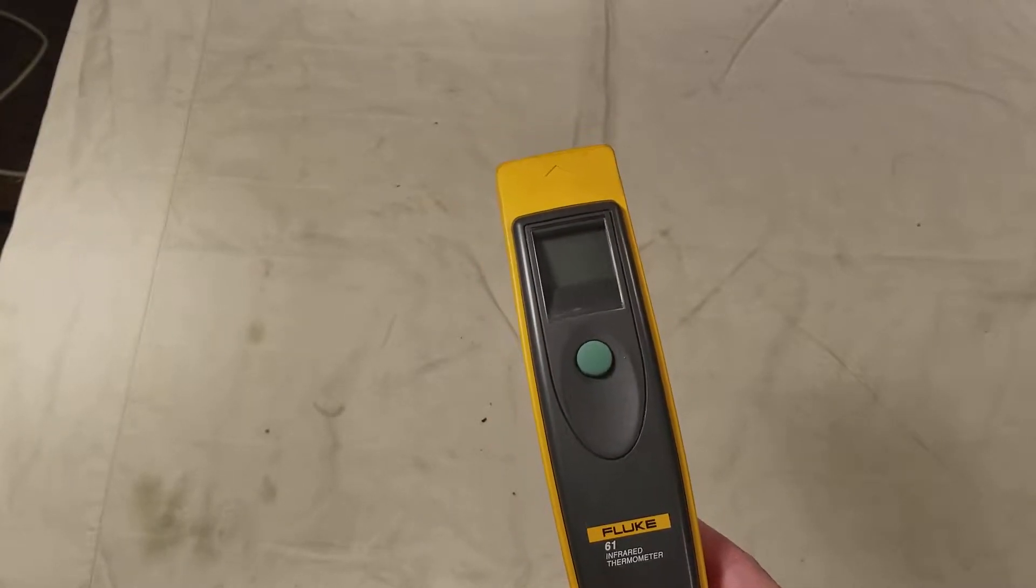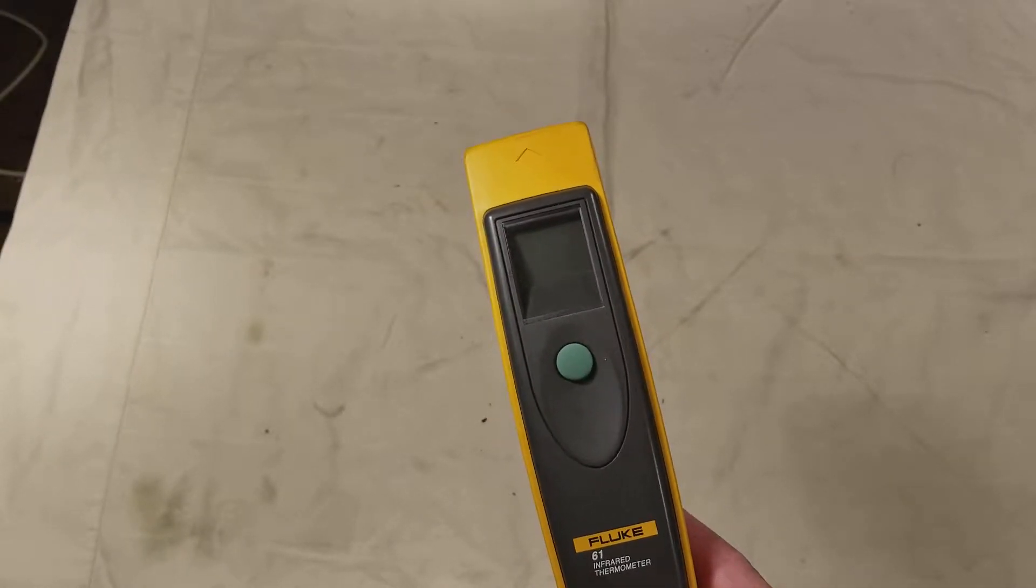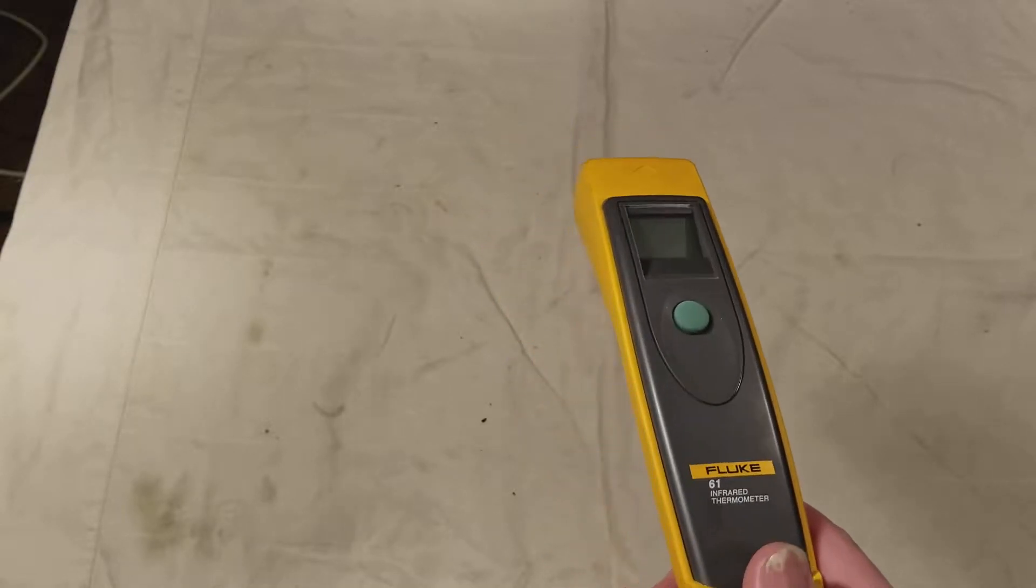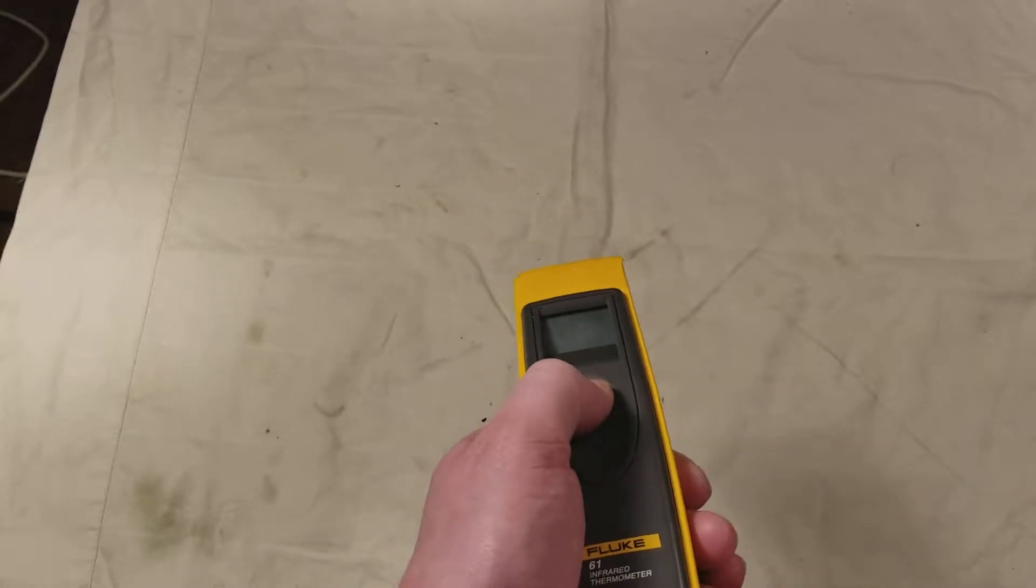You need to use a heat gun to get them hot enough to peel the glass off, and it's really nice just to use one of these to point it out to see that you're at the right temperature, whatever it is, hundred and something odd degrees.